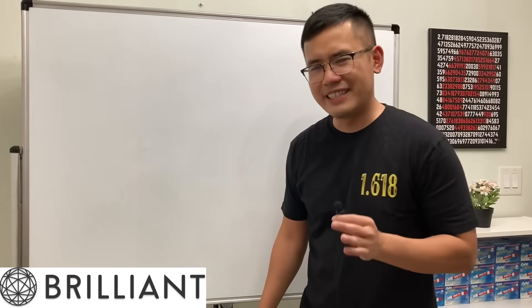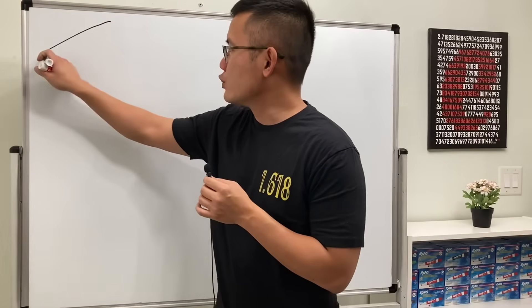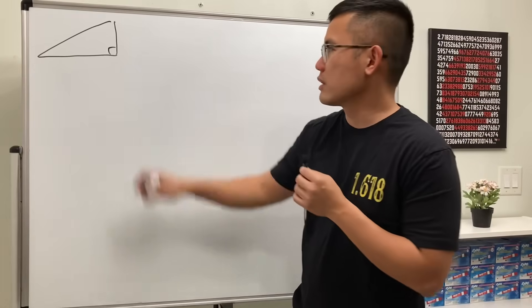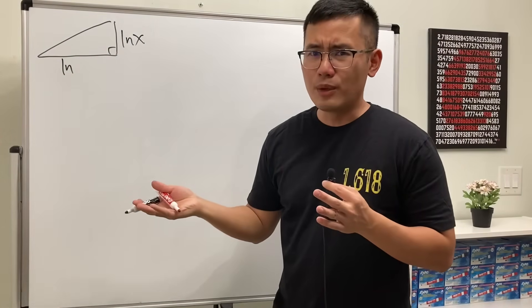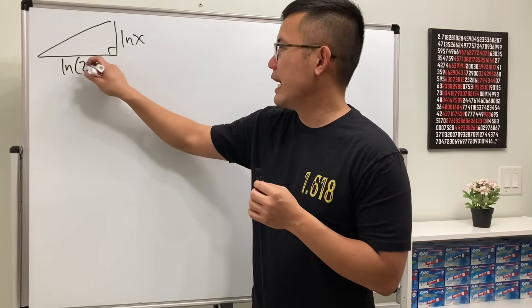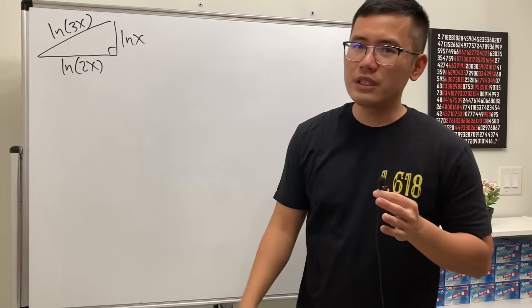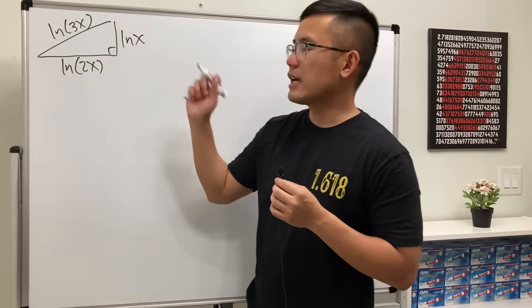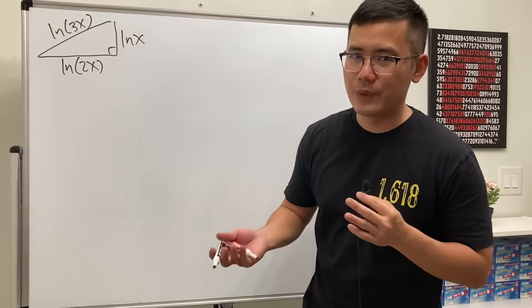Let's do some math for fun today — I have a log triangle for you. Let me show you: first, a right triangle, and because we're talking about log functions, let's use the natural log. I'll label the sides as ln(x), ln(2x), and ln(3x). The question is: can we find an x value so that this is actually a legitimate right triangle? The answer is yes.